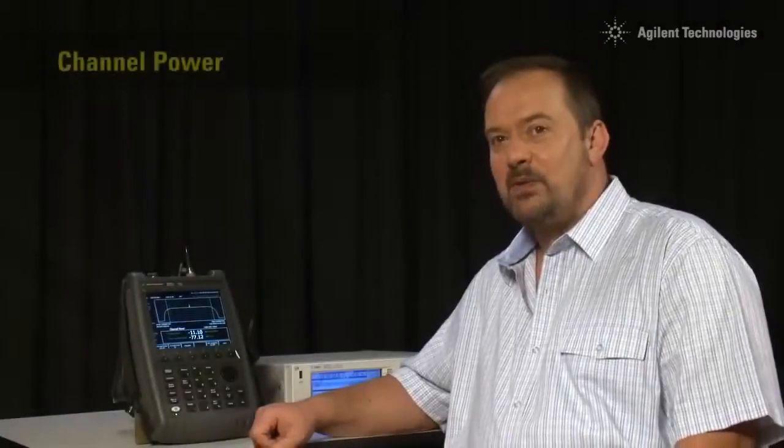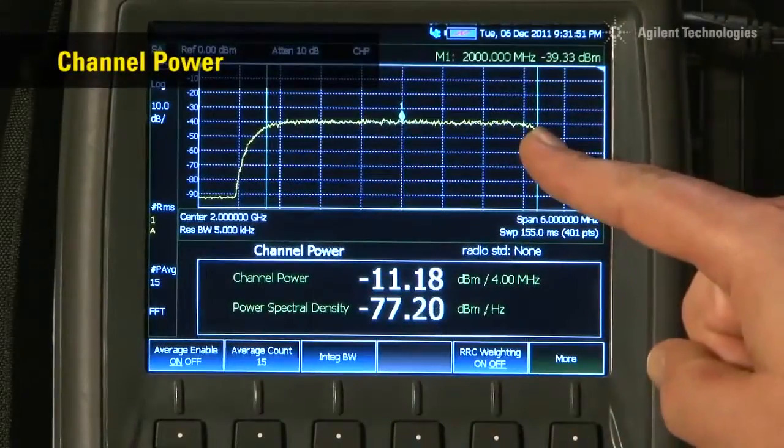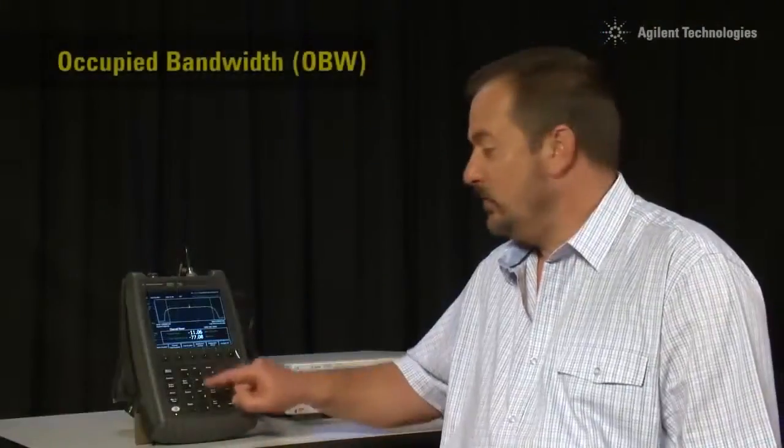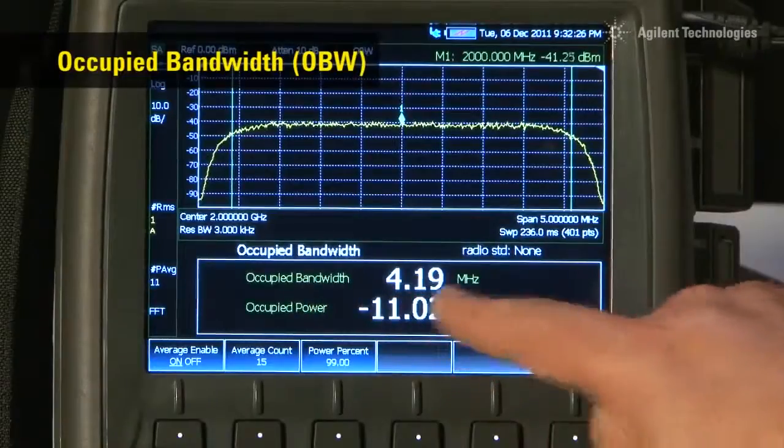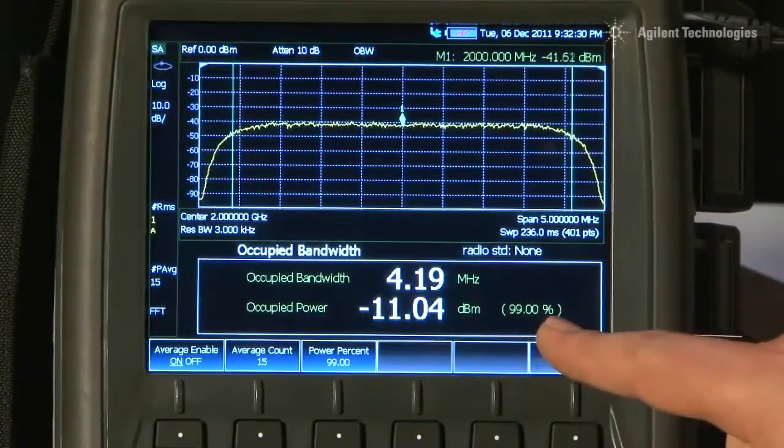The FieldFox will automatically measure channel power of modulated transmissions such as this spread spectrum WCDMA signal. We can also measure the occupied bandwidth of the signal. Here you can see the occupied bandwidth is 4.2 MHz and the power is minus 11 dBm.